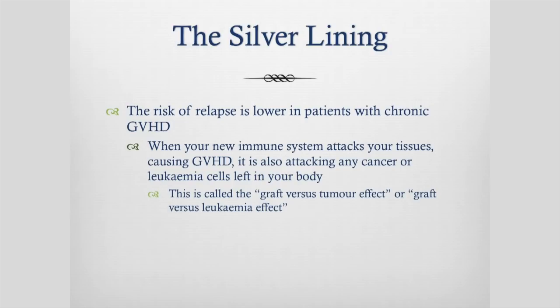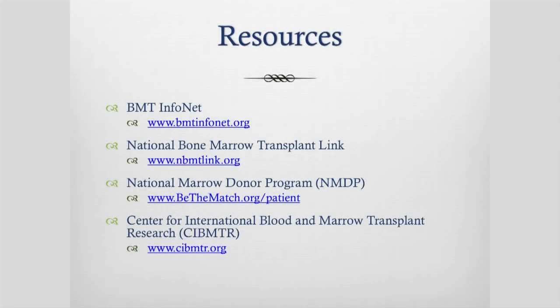The silver lining is that the risk of relapse is lower in patients who have some chronic graft versus host disease. When your new immune system attacks your tissues causing GVHD, it's also attacking any cancer or leukemia cells left in your body — this is called the graft versus tumor effect or graft versus leukemia effect, and it's one of the important reasons why allogeneic stem cell transplants work. Some websites where you may find information and education about graft versus host disease have been provided — most are American sites so be aware of different ways of treating and accessing the health system.